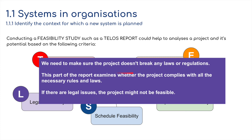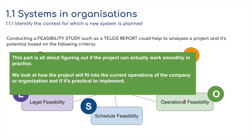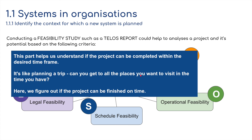For legal feasibility, we need to make sure the project doesn't break any laws or regulations. This part examines whether the project complies with all necessary rules and laws — if there are any legal issues, the project might not be feasible. For operational feasibility, we look at how the project will fit into the current operations of the company and if it's practical to implement. Finally, schedule feasibility asks whether we can do everything we want in the time frame available — like planning a trip, can you get to all the places you want in the time you have?